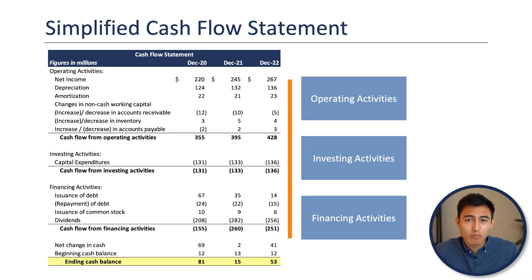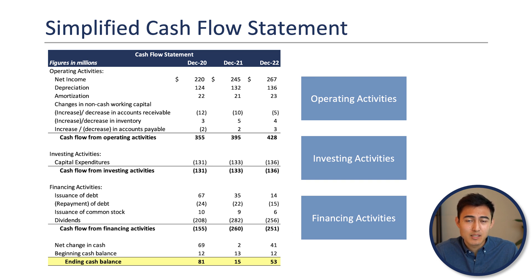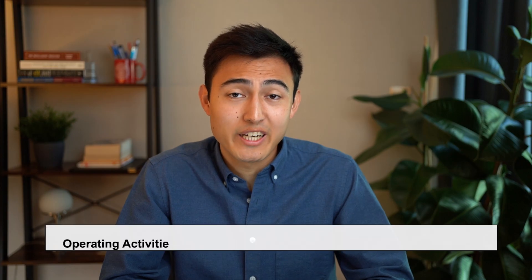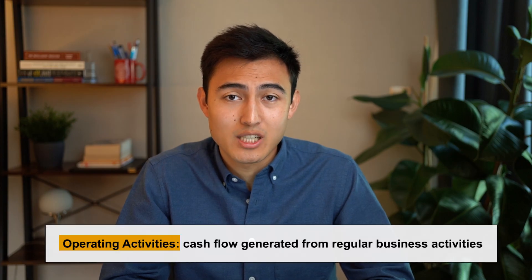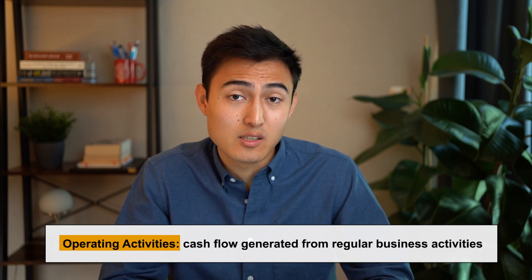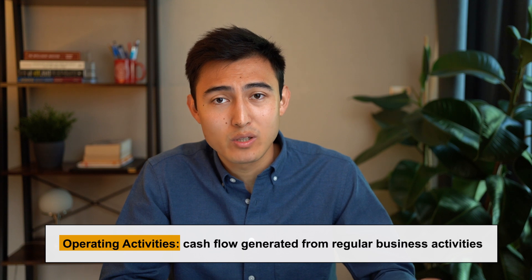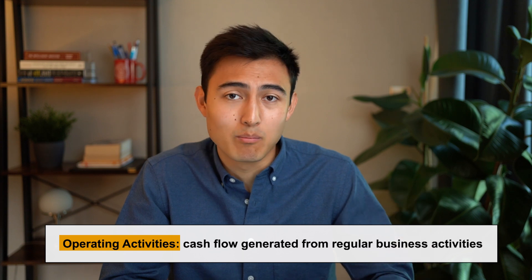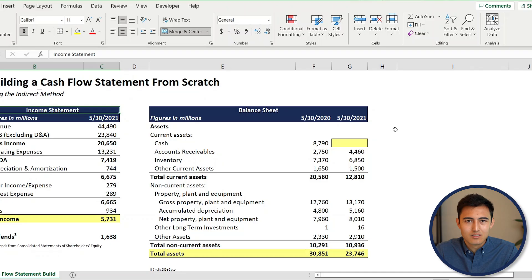To give you some background on the cash flow statement, there are three main sections: cash flow from operating activities, cash flow from investing activities, and cash flow from financing activities. After summing these three, you get the change in cash. We'll start with the operating section, which covers cash inflows and outflows from core business activity — things like buying inventory or collecting bills from customers.